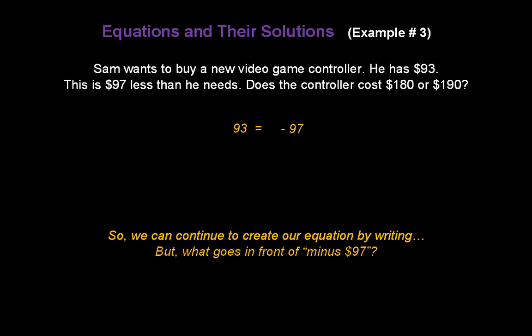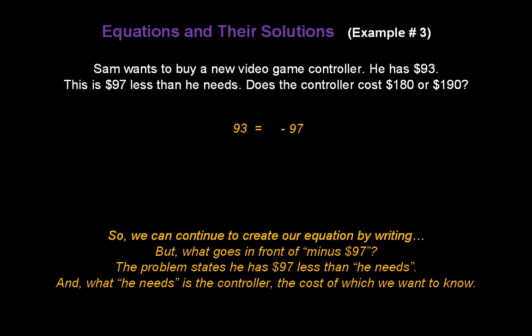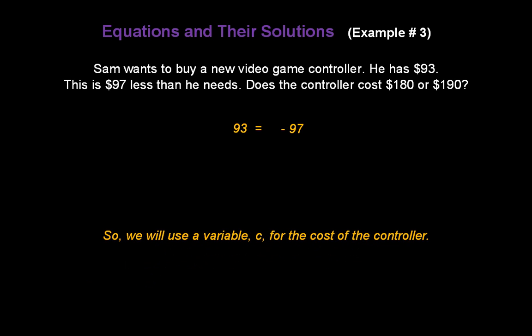But what goes in front of minus $97? The problem states he has $97 less than he needs. And what he needs is the controller. That's the cost of which we want to know. So we can use a variable like C for the cost of the controller and finish our equation. 93 equals C minus 97.